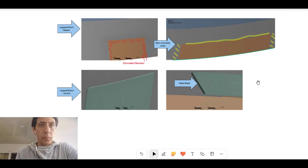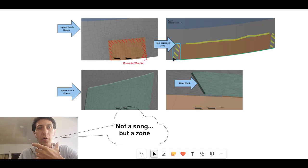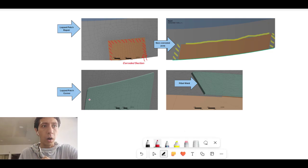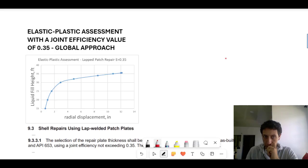When we consider lap patch repair, we need to be consistent in the FEA model. So there is corrosion and there is a zone free of corrosion like in this case. But also we consider round corners like this and a fillet weld between the lap patch and the shell. Here, for example, we have the thin section, the corroded section.